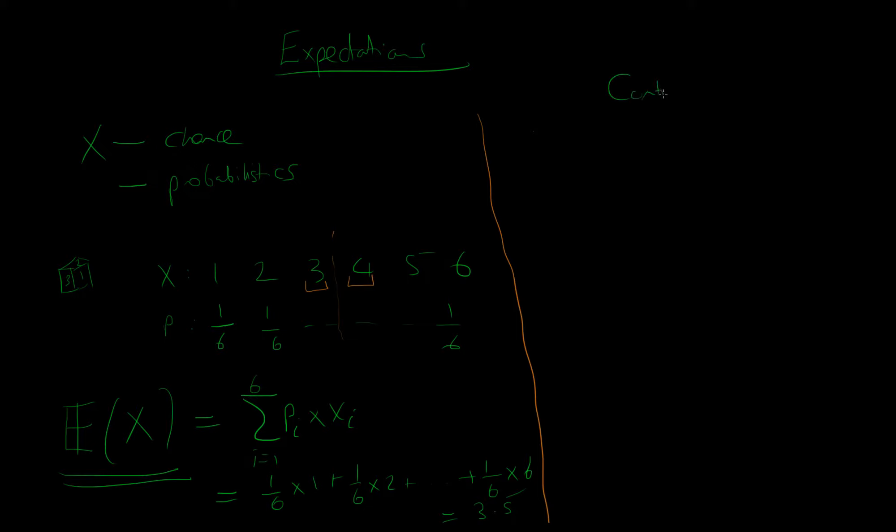So we can also think about continuous random variables. A continuous random variable is one for which there is an associated probability value of the variable taking any given value. So we could think about a probability distribution which looks something like this, and these are all the different values of X which our random variable could take.